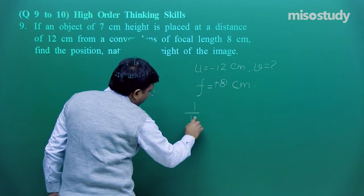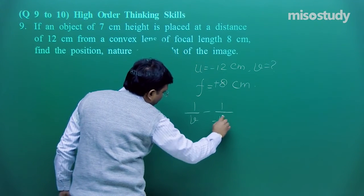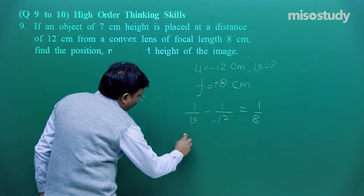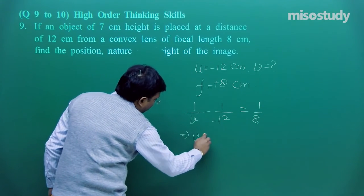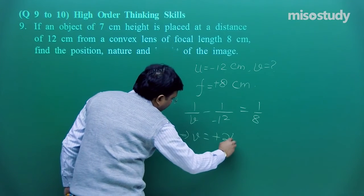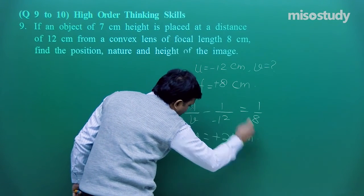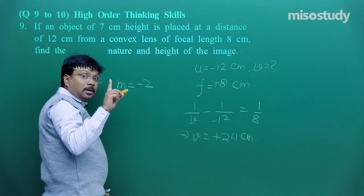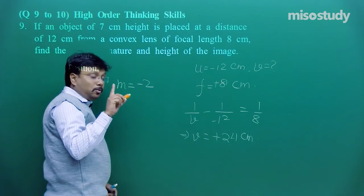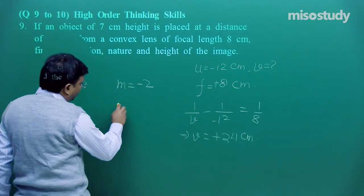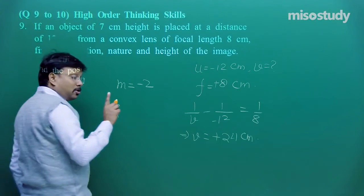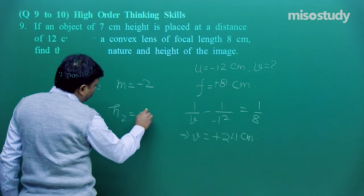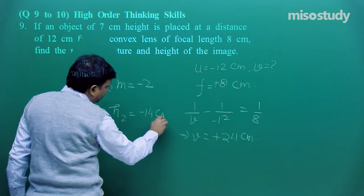So it is 1 upon v minus 1 upon minus 12 is equal to 1 by 8. Now if you solve it, you will get v is equal to plus 24 centimeter. So m is equal to minus 2 upon m is equal to v upon u and h2. So h2 is equal to minus 14 centimeter. Every term is explained.